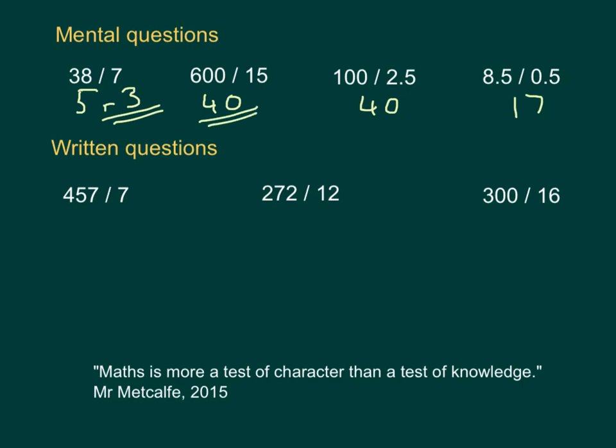How many 2.5s in 100? Again, I would probably multiply 2.5 by 10 to get 25. How many 25s in 100? 4. So, that must be 40. And, finally, how many halves in 8 and a half? Well, there'll be 16 halves in 8, and then another one in the 0.5, so that gives me a total of 17.